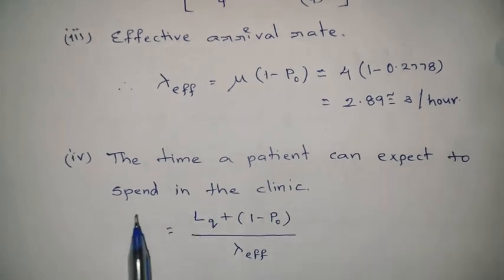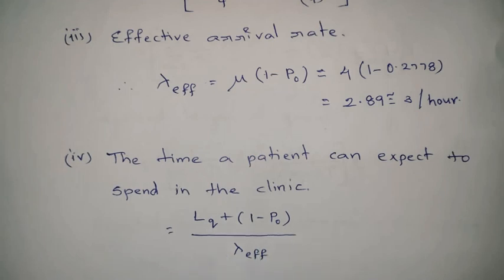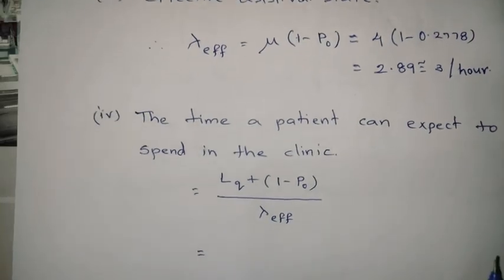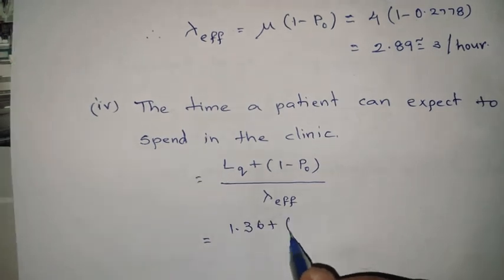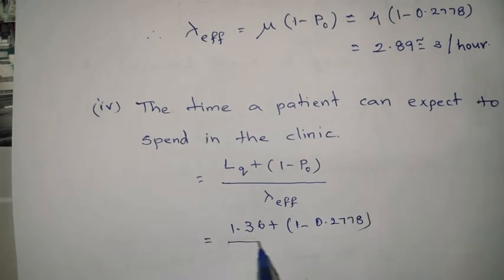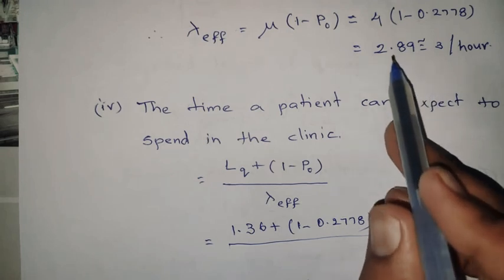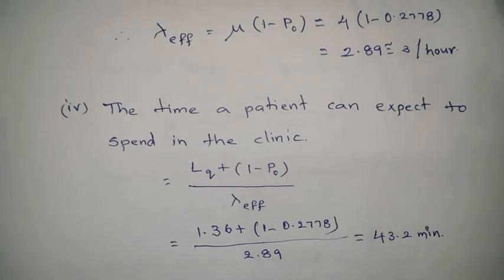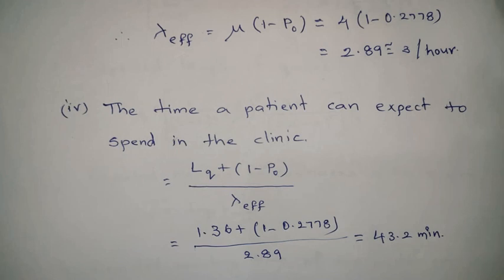Part 4: The time a patient can expect to spend in the clinic equals (L_q + 1 − P(0)) / λ_effective = (1.36 + 1 − 0.2778) / 2.89 = 43.2 minutes. So by identifying the model, finding arrival and service rates, and substituting into the formulas, we get all required answers.